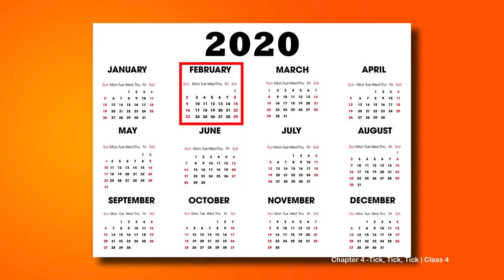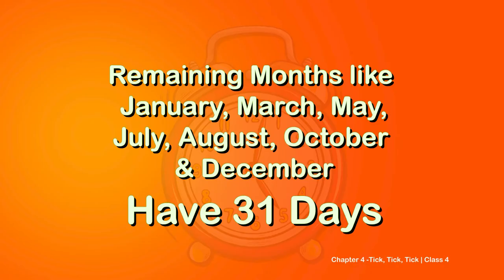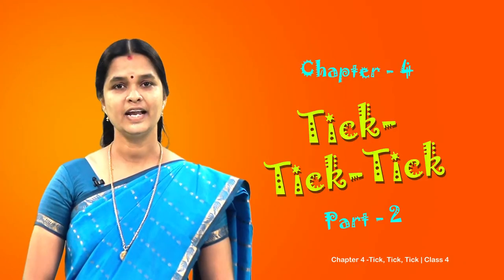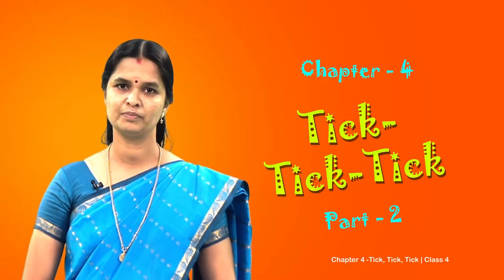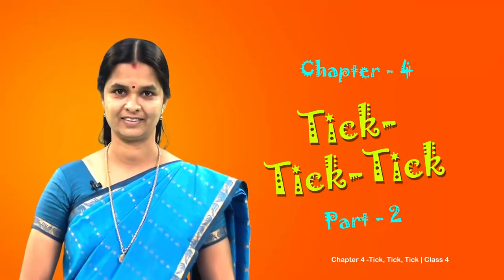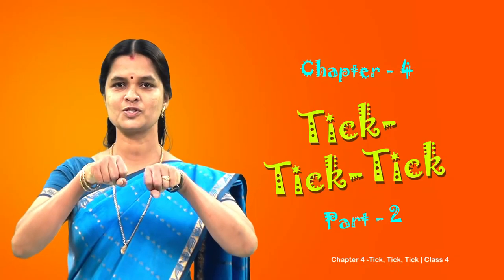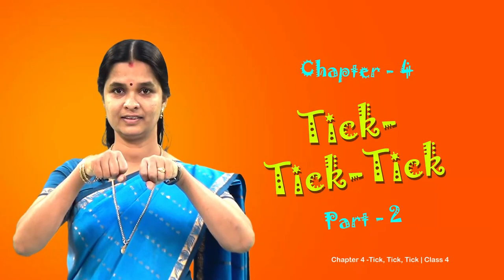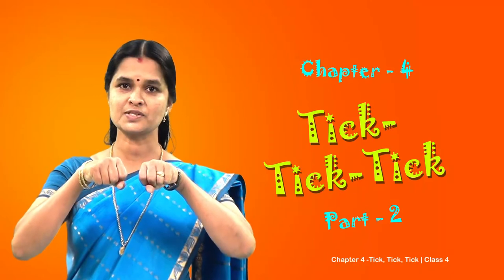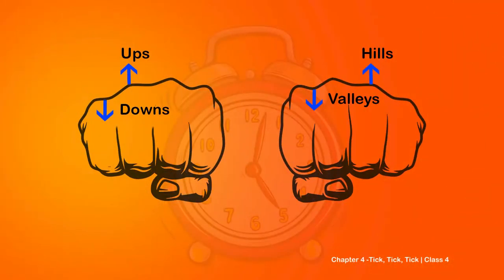Correct - February! What about the remaining months? All of them have 31 days. Now let us see how to remember the number of days in each month. I will tell you a trick. All of you close your fist like this. Ready? Now can you see the ups and downs? Yes, we shall name them as hills and valleys.